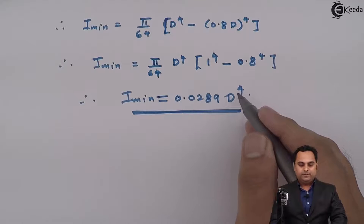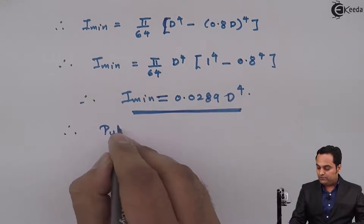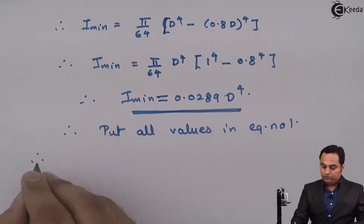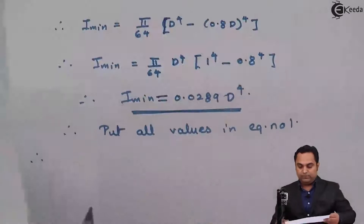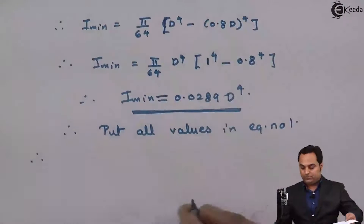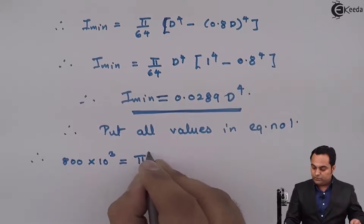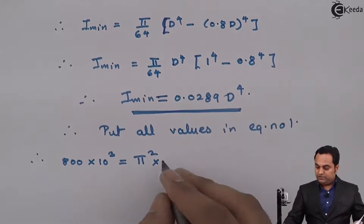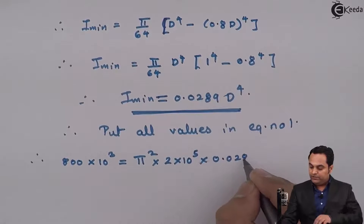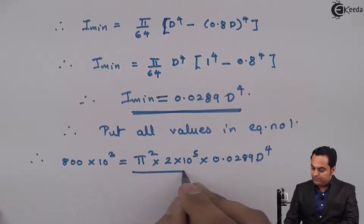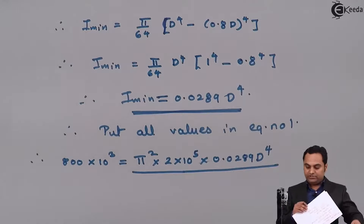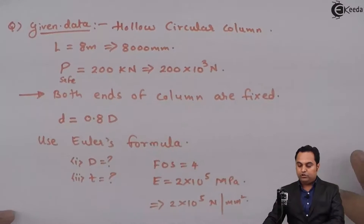Now I will put all values in equation number one. Euler's load is 800×10³, equal to π² × E (which is 2×10⁵) × I_min (which is 0.0289D⁴), divided by effective length squared. The only remaining unknown is the effective length.